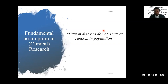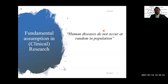We can use that knowledge to predict possible outcomes, cause of the disease, and all the other aspects of disease progression. The fundamental principle in research and clinical research specifically is that human diseases do not occur at random in the population. I want to clarify that 'random' is a well-defined standard term. We believe there is a pattern, and we can understand that pattern. Knowledge of that variation can help us explain causality and the course of the disease.